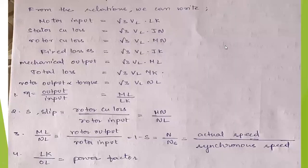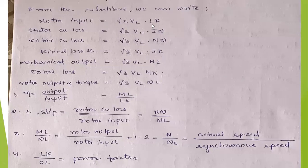So up to now we have seen the various points, various losses and regarding the circle diagram. So now we will formulate the various formulas in one page, and from the relations what we have seen, we can write: motor input is equal to root 3 VL LK.